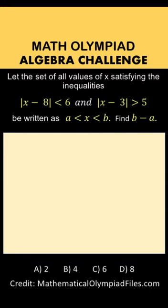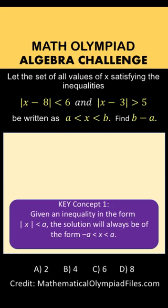Now let's solve this problem together. Let's recall two key concepts we'll use to solve these absolute value inequalities. The first one: if we have an inequality in the form |X| < a, the solution will always be -a < X < a, where X is the expression inside the absolute value.